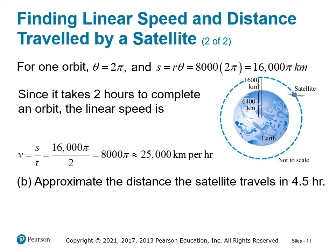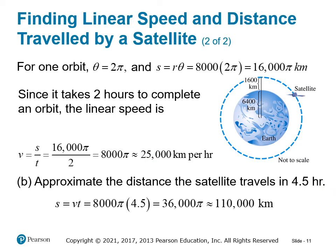To approximate the distance the satellite travels in 4.5 hours: we know the linear speed, so we multiply by 4.5 hours and get approximately 110,000 kilometers.